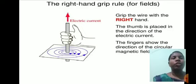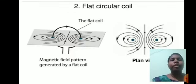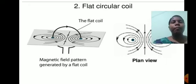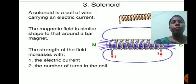Second, flat circular coil. A magnetic field pattern is generated by a flat coil. This is a plane view.